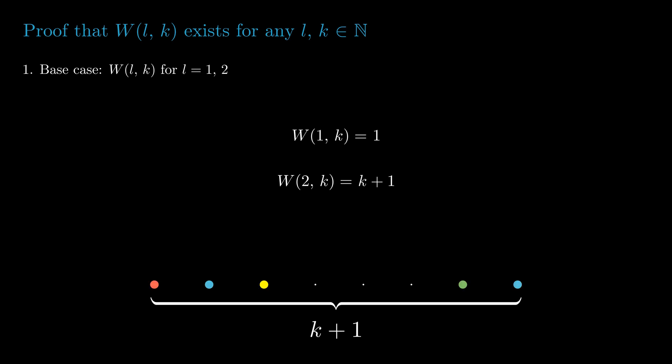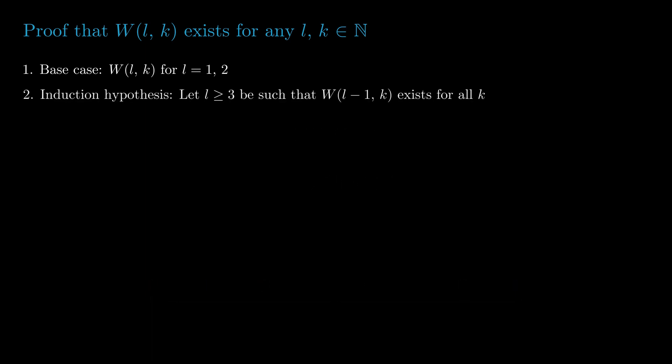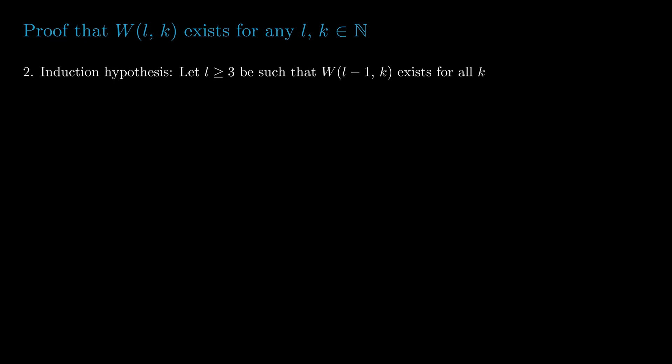For the induction hypothesis, we will take l ≥ 3 such that the van der Waerden number for (l - 1, k) exists for all k.